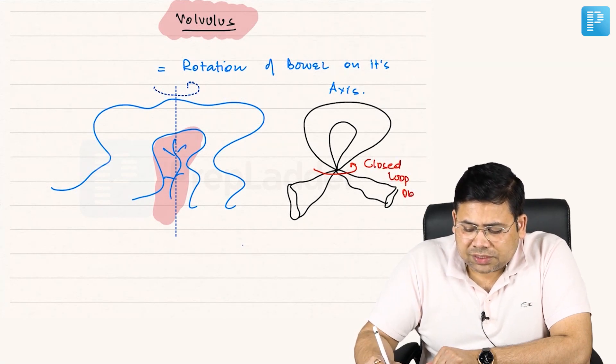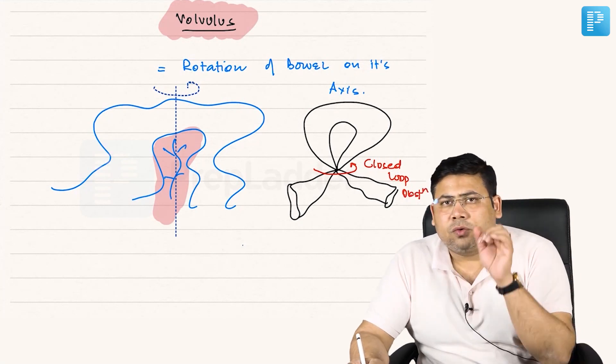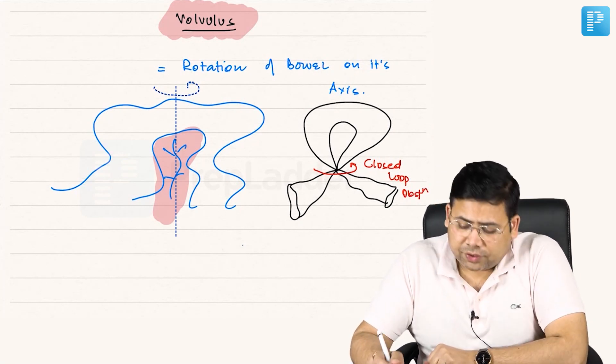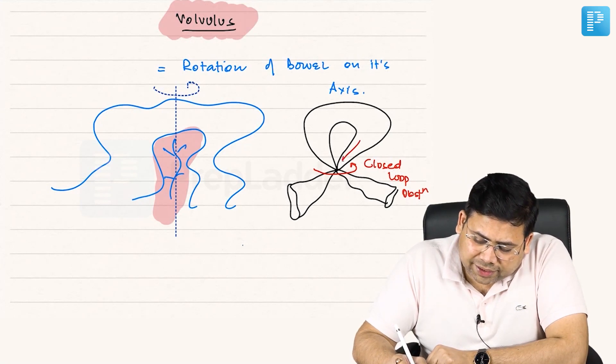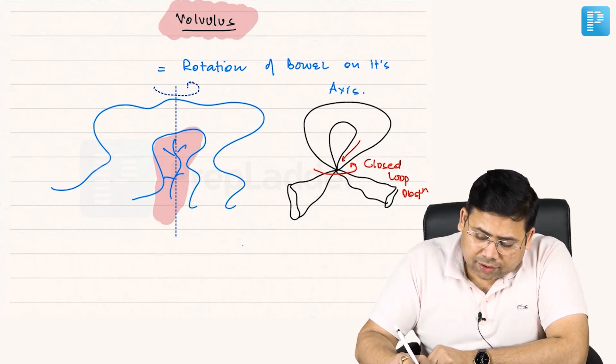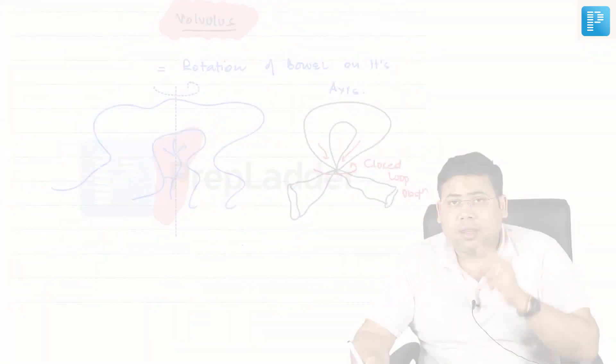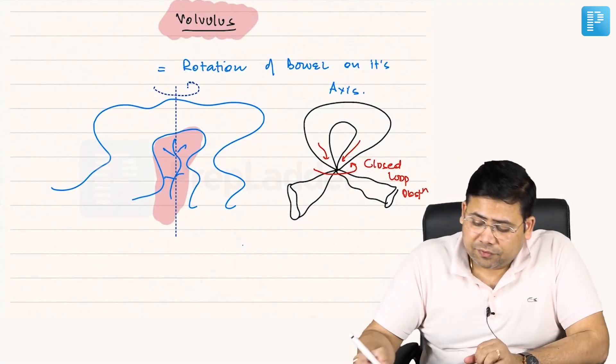What is a volvulus? In a simple language, it is a closed loop obstruction. Try to see this end, it is locked. Try to see this end, it is locked. And this is the most dangerous thing that can happen.